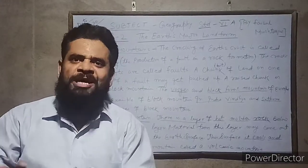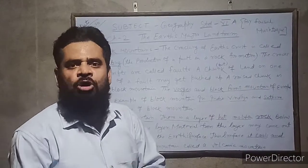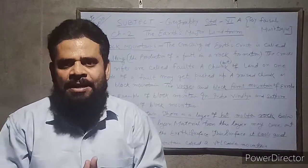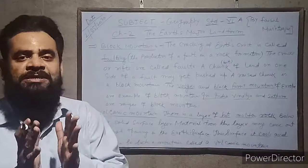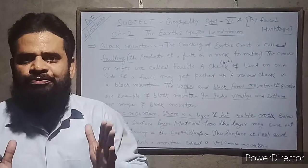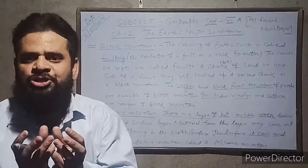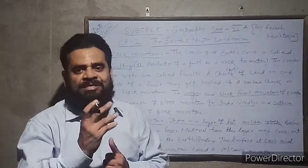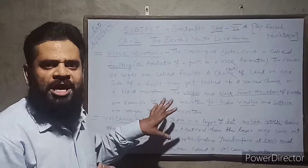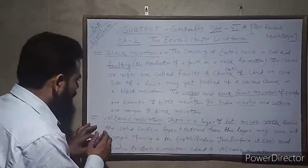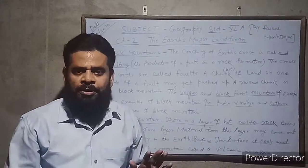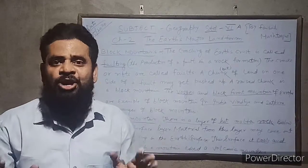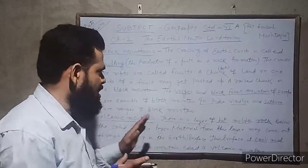A volcanic mountain consists of a magma chamber, vent, lava, crater, and pyroclastic flow. Pyroclastic refers to fragments of rocks ejected by volcanoes. Volcanic mountains are very fertile — the reason is that all the required nutrients come out with these volcanic eruptions.